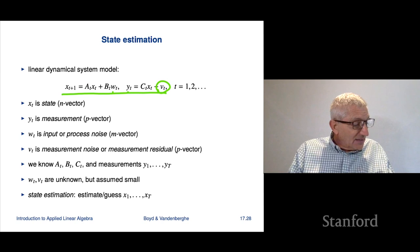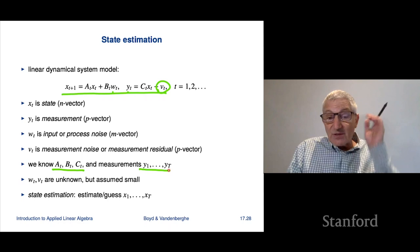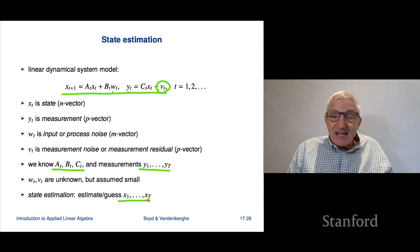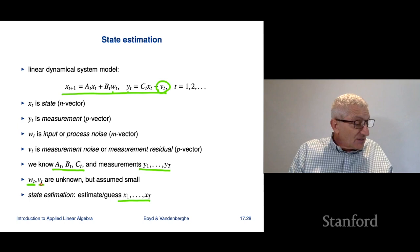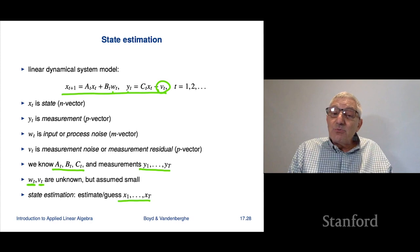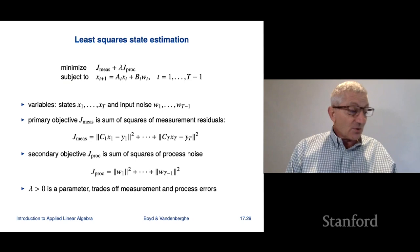In the state estimation problem, here's the statement of the problem. I'll tell you what AT, BT, C are and I'm going to tell you what the measurements are, Y1 through YT. Your job is this: estimate or guess the state sequence. I should say that these two noises, the process noise and the measurement noise, Wt and Vt, they're not known, but they're assumed to be small. And that's going to be how we're going to formulate a constrained least squares problem to solve the state estimation problem.